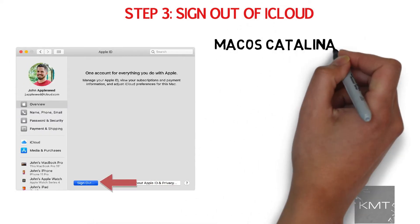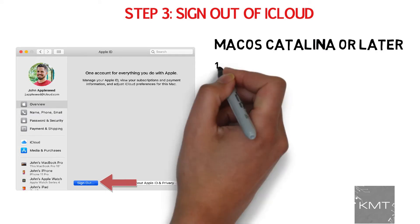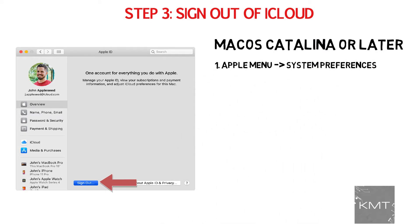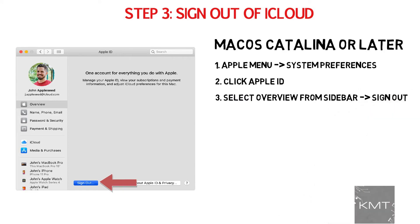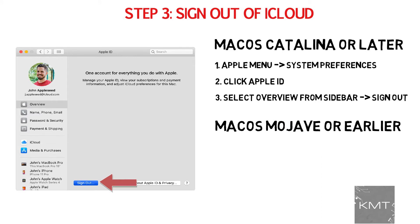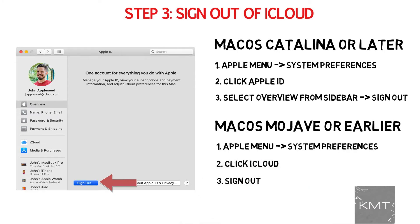Step number three: sign out of iCloud. If you're currently running the latest macOS Catalina or later, you will navigate to Apple menu, System Preferences, then click Apple ID. Select Overview in the sidebar, then click Sign Out. You will be asked whether to keep a copy of your iCloud data on this Mac. Click Keep a Copy because you're erasing your Mac later. Your iCloud data remains in iCloud and on any other devices that are signed in to iCloud with your Apple ID.